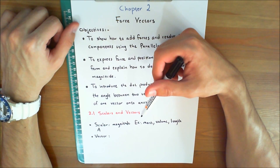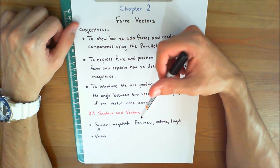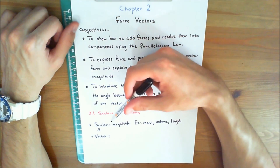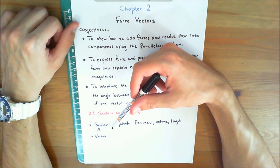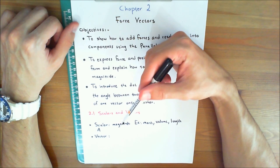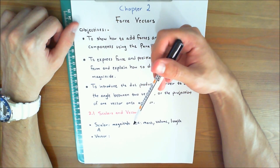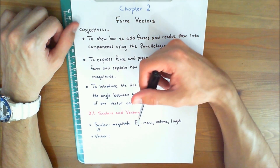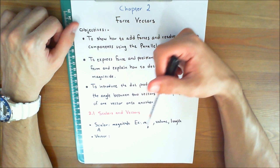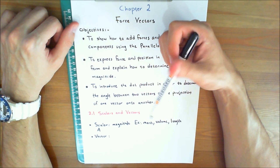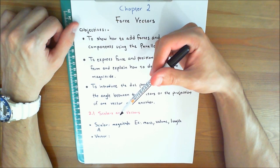Let's start with a quick introduction to the concept of scalars and vectors. A scalar, by definition, is a quantity characterized by a positive or negative number, meaning that it only has magnitude. For example, mass, volume, and length are scalar quantities often used in statics.